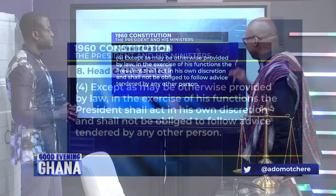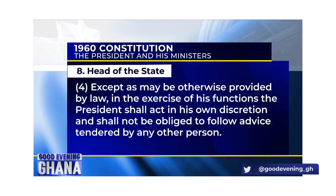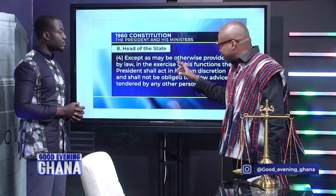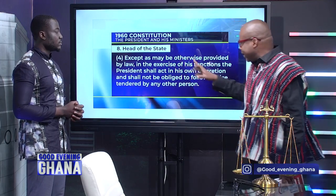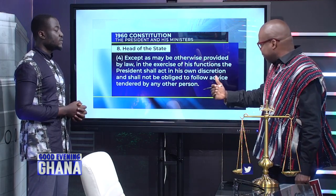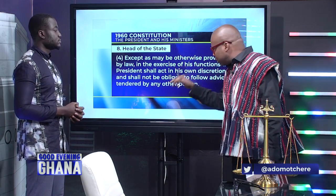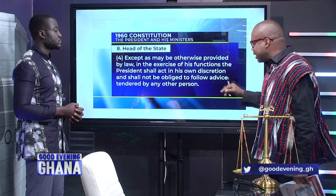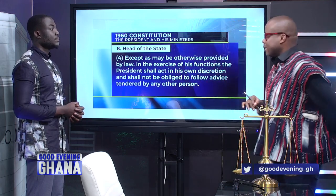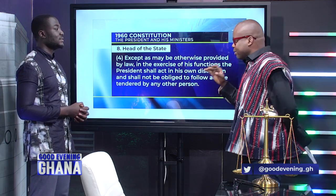Article H4 states that, except as may be otherwise provided by law, in the exercise of his functions, the president shall act in his own discretion and shall not be obliged to follow advice tendered by any other person. This is one of the interesting ones that typifies Kwame Nkrumah. We don't have anything like that in the current constitution — it's gone.